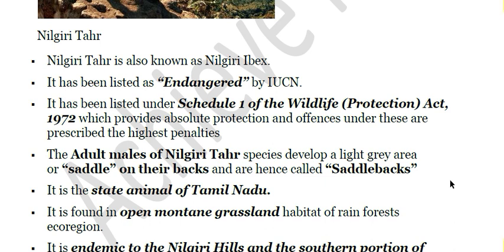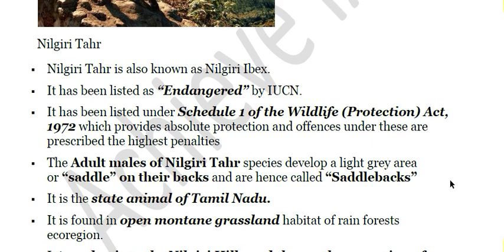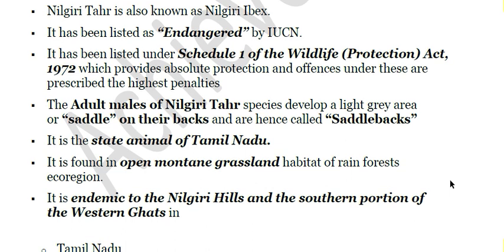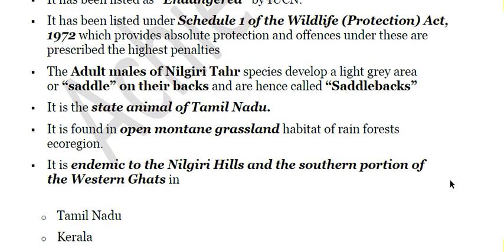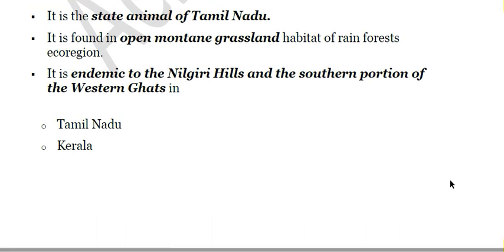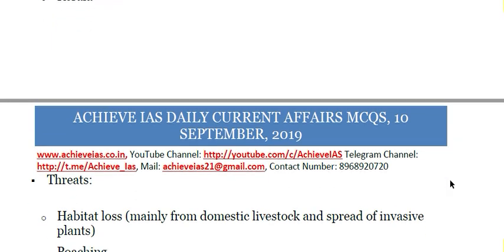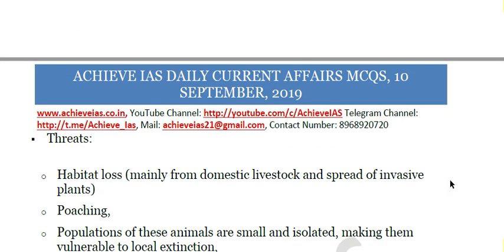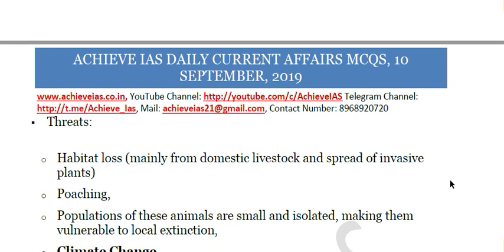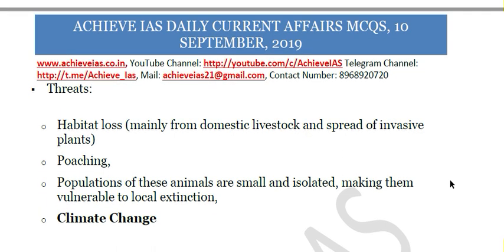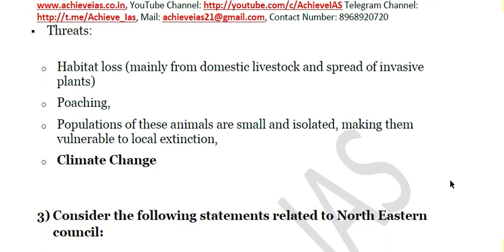Adult males of the Nilgiri Tahr develop a light gray saddle on their backs, which is why they are also called 'saddlebacks.' The species is found in open mountain grasslands, endemic to the Nilgiri Hills and southern Western Ghats in Tamil Nadu and Kerala. Threats include habitat loss due to domestic livestock, spread of invasive plants, poaching, and climate change. Small, isolated populations make them vulnerable to local extinction.